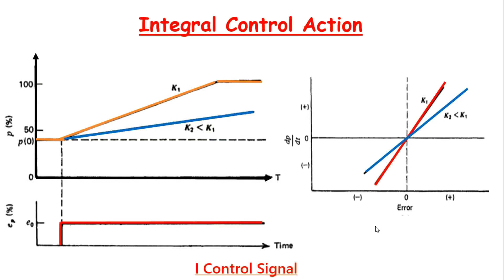This figure shows how the rate of change of controller output depends upon the value of error and the size of the gain. The figure also shows how the actual controller output would look if a constant error occurs — you can see how the controller output begins to ramp up at the rate determined by the gain Ki. The output finally saturates at 100% and no further action can occur.